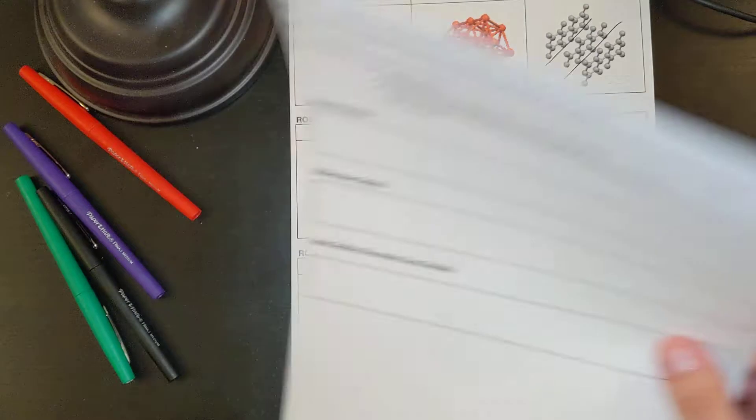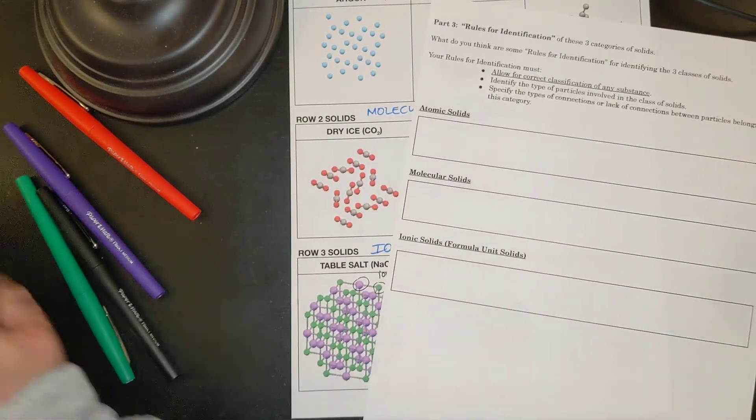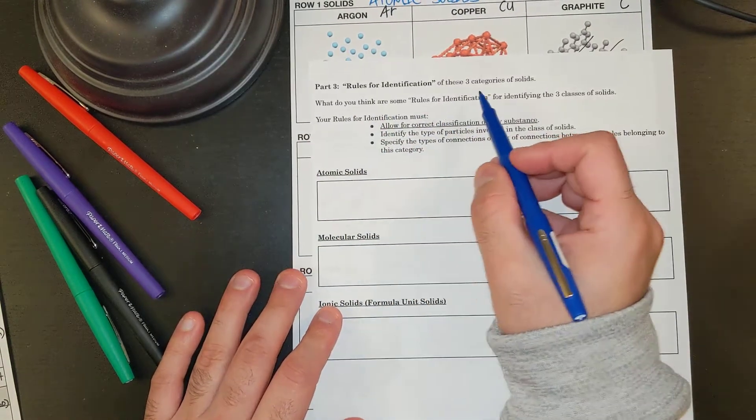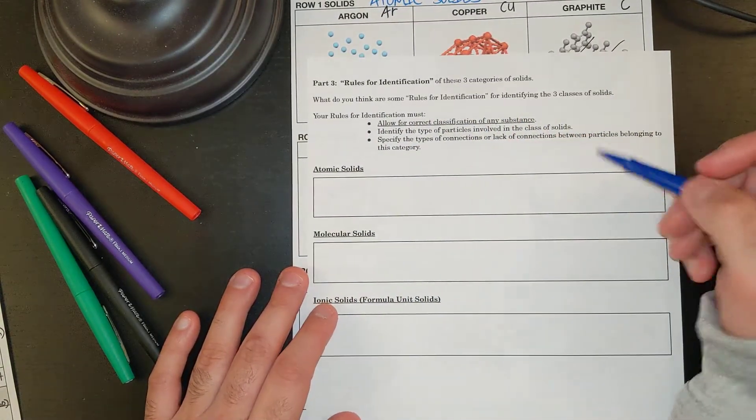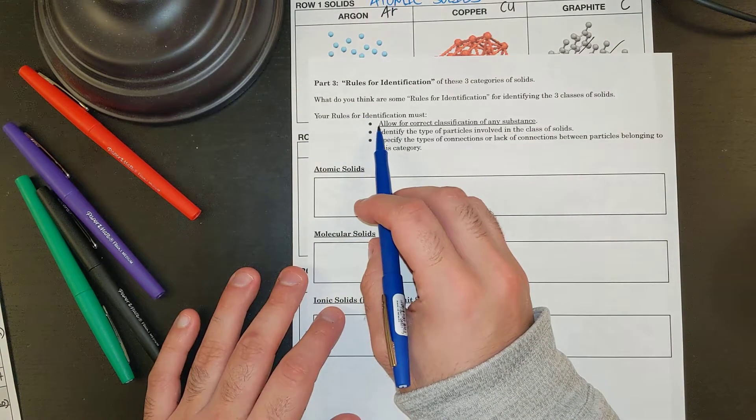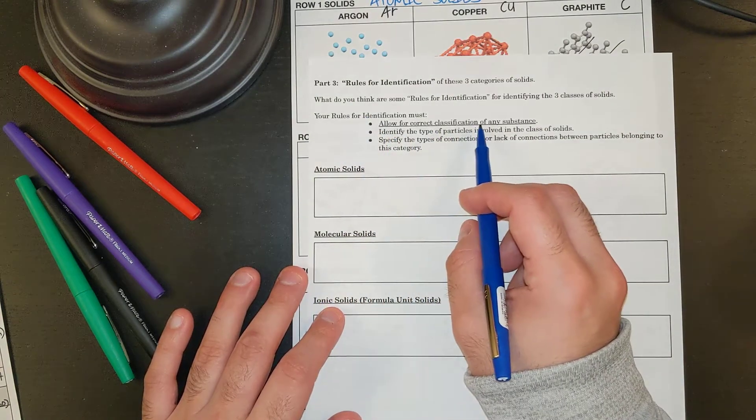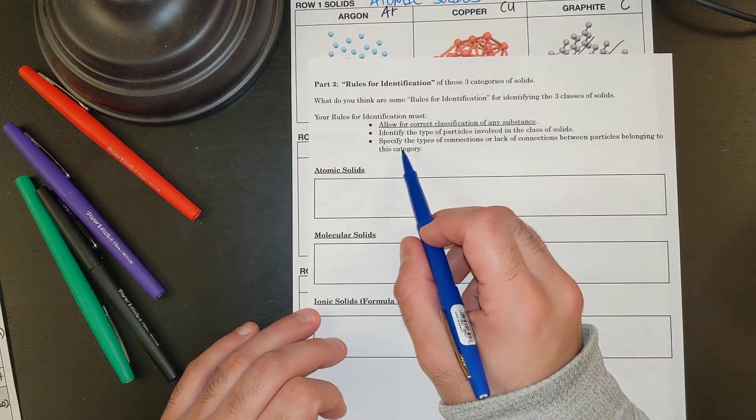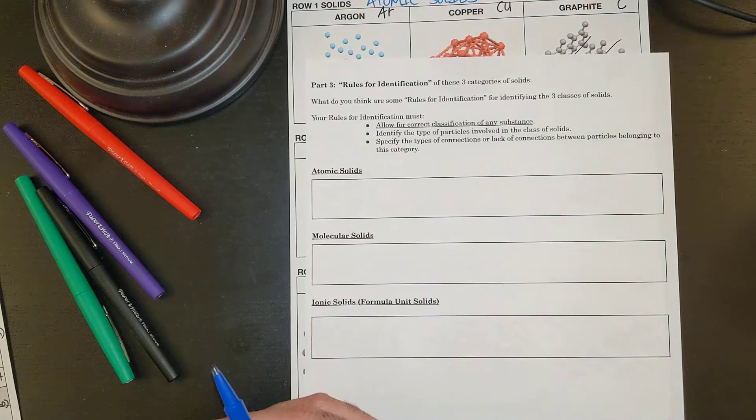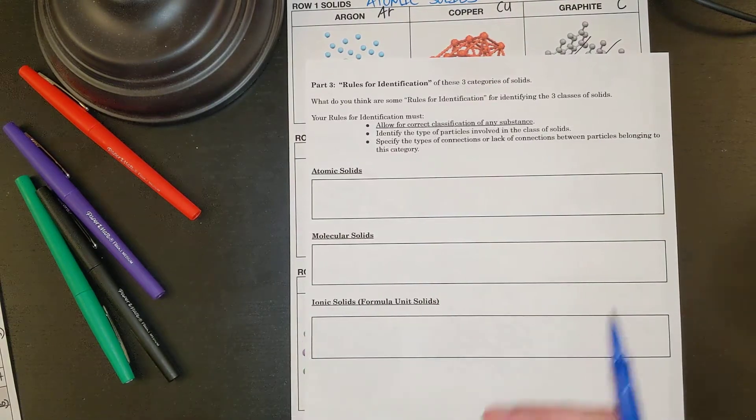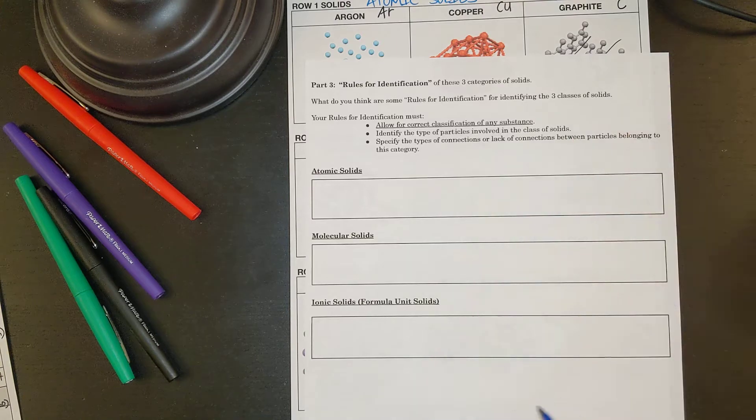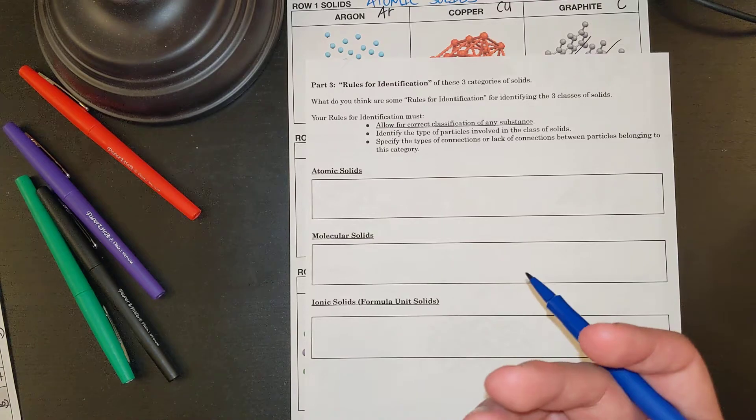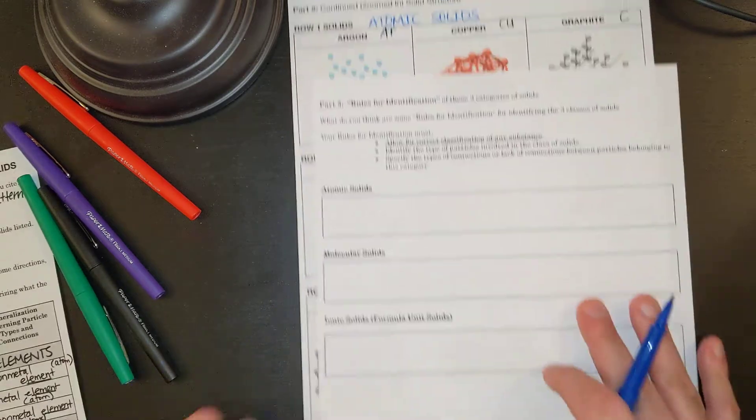So we already wrote down some generalizations in our notes right here, but let's condense them together. What do you think are some rules for identification for identifying the three classes of solids? Your rules for identification must allow for correct classification of any substance, identify the type of particles involved in the class of solids, specify the types of connections or lack of connections between particles. So if you want, you could pause this video and try and come up with it on your own, or you could just follow along with our synthesis.